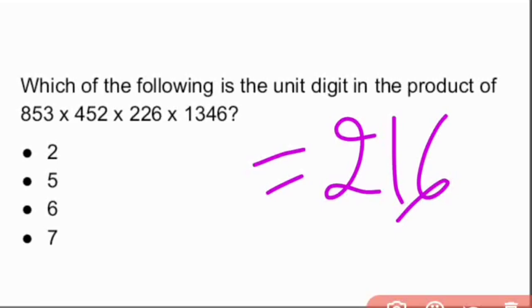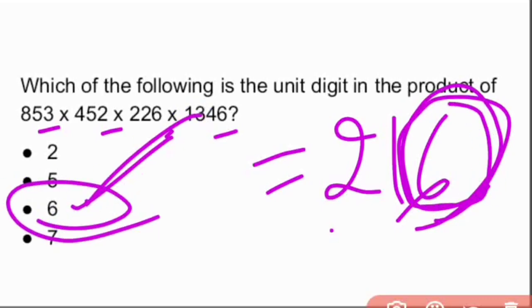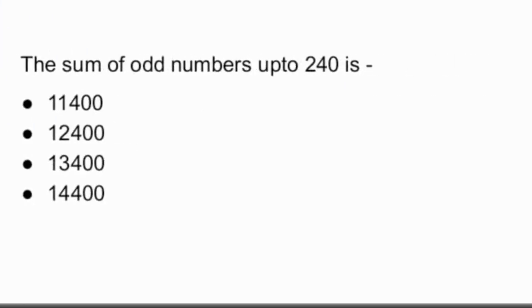So 216 is the product of last digits of these numbers. In the answer, the last digit will be our answer. And in 216, the unit place has 6. So our answer is number 6. Next question.